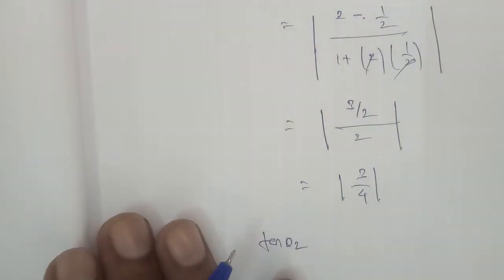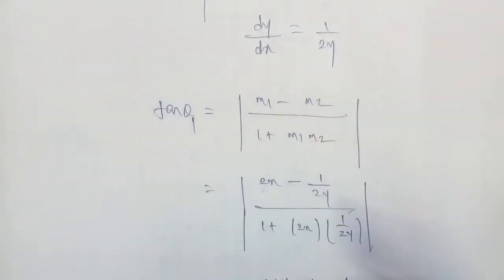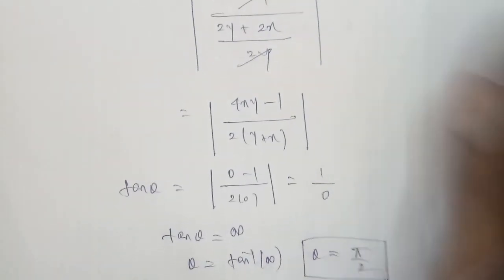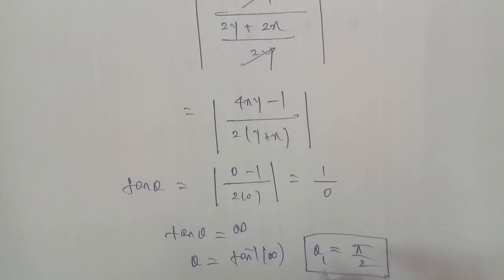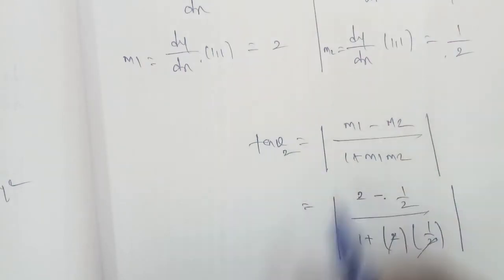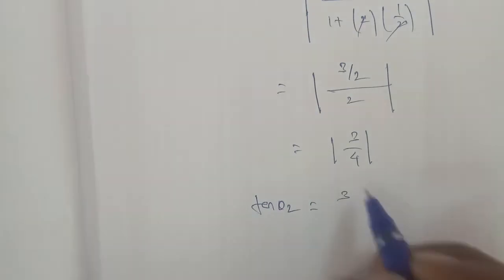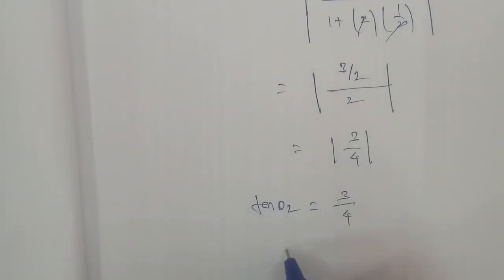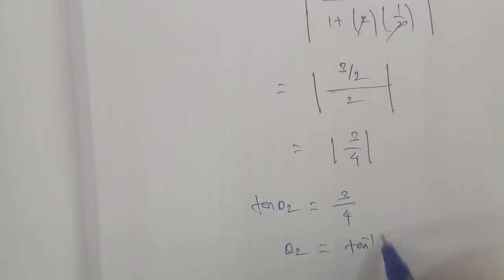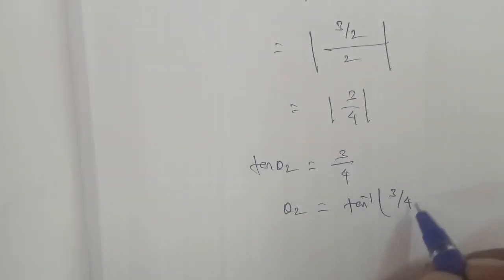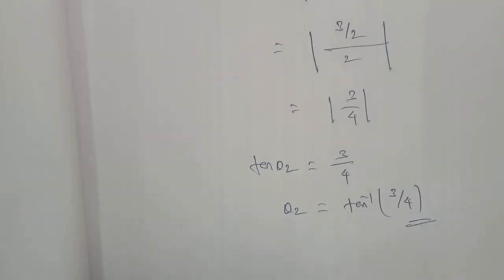Therefore theta 2 is equal to tan inverse of 3 by 4. So the answer is theta equals tan inverse of 3 by 4. Thank you.